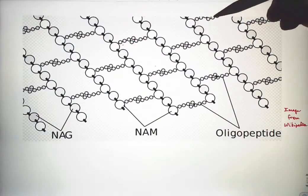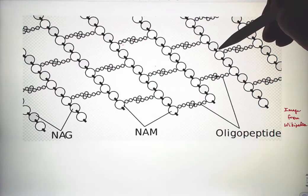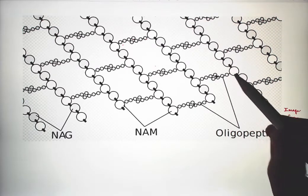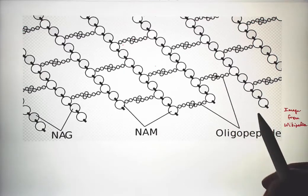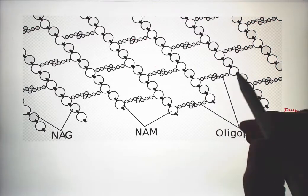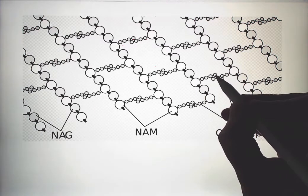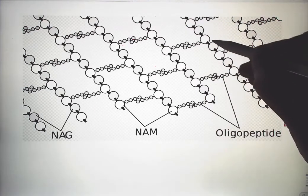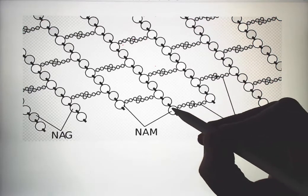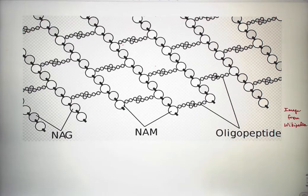The sacculus is tough because of its structure, a series of sugars connected by covalent bonds, and every other sugar has a side chain of oligopeptide, a short chain of amino acids. Those amino acids are connected at at least one point by a covalent bond between pairs. So this whole structure is one large macromolecule connected by covalent bonds, making it tough.